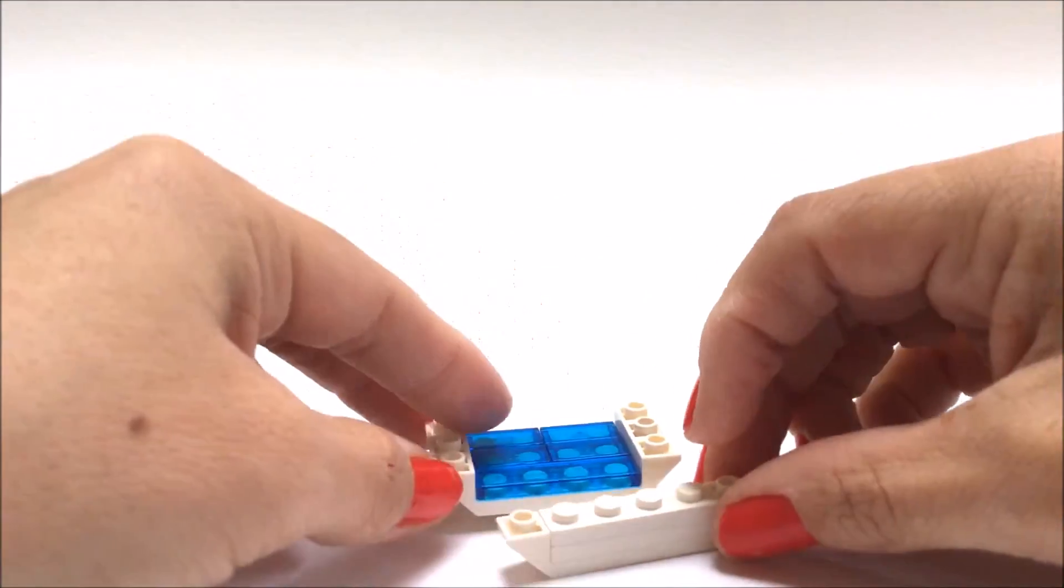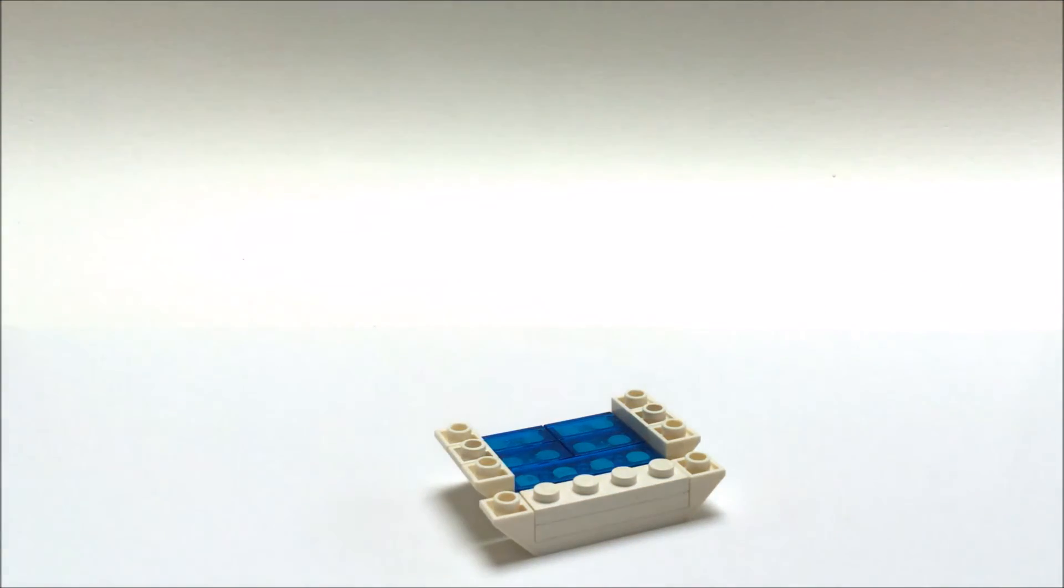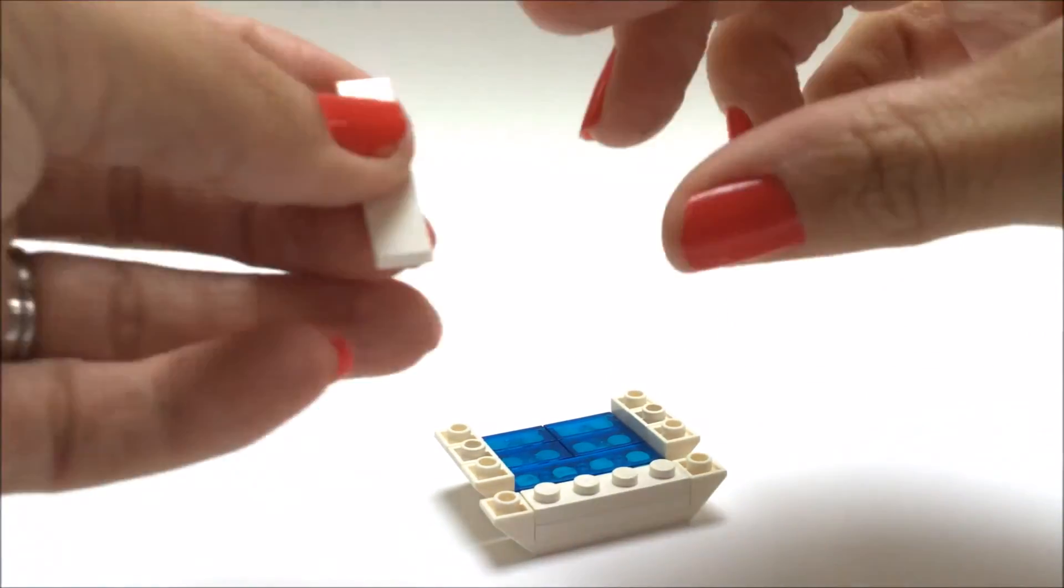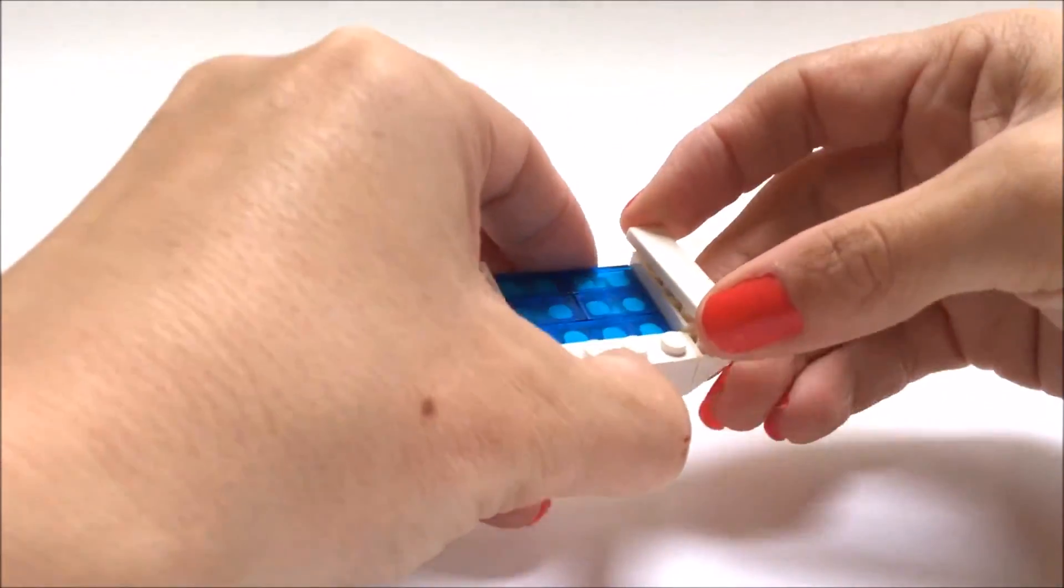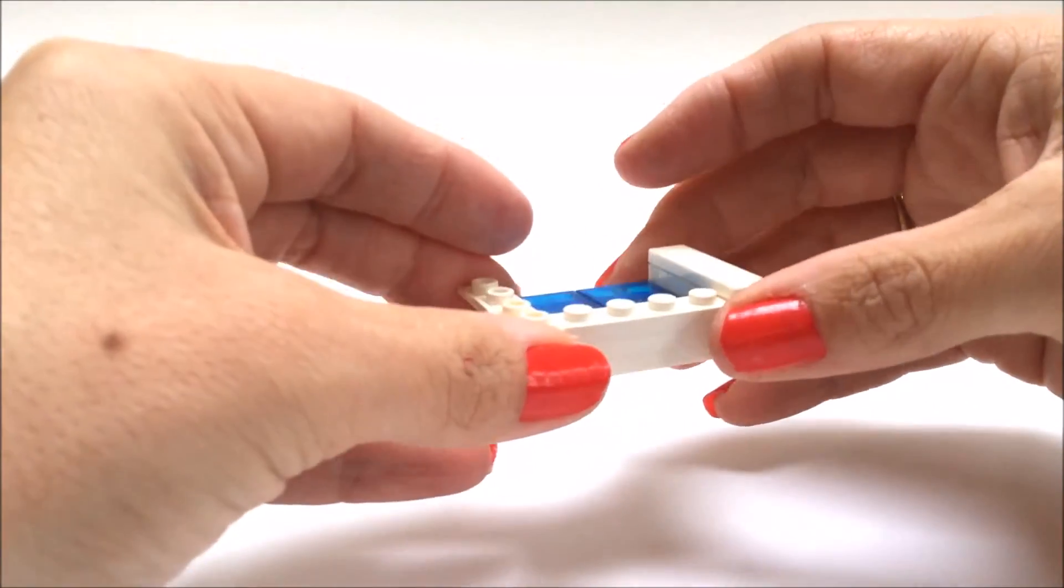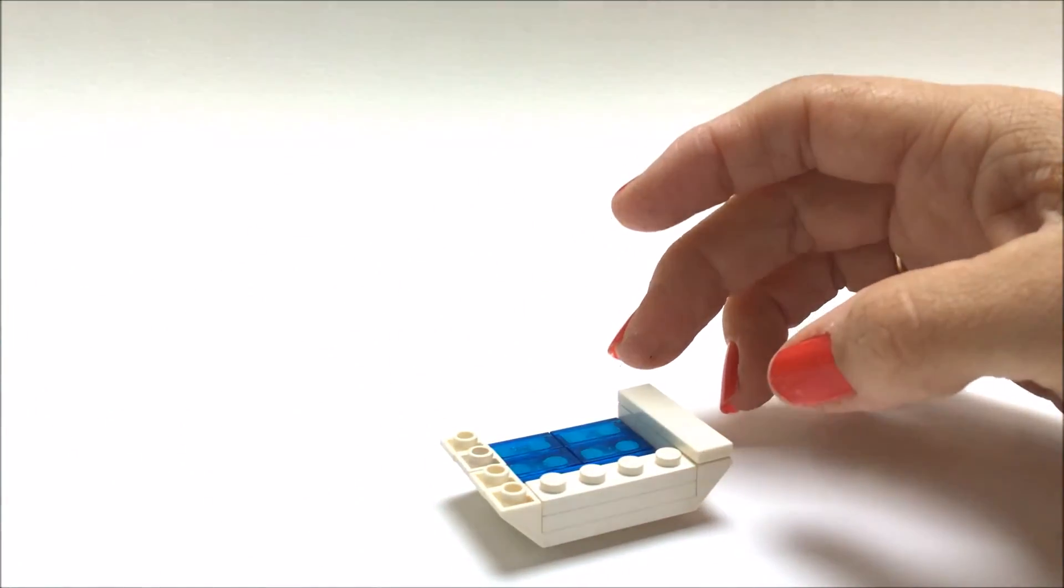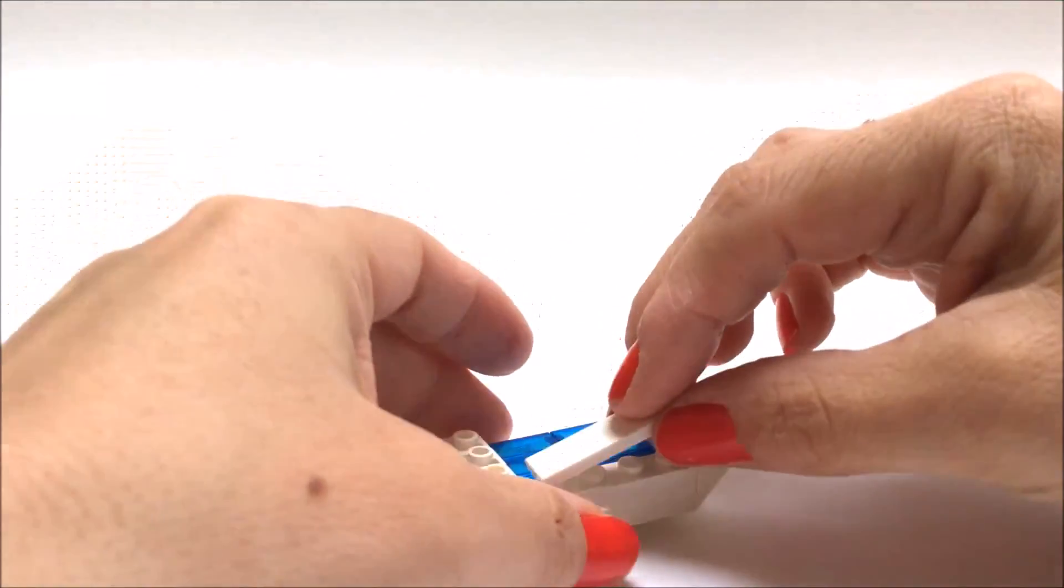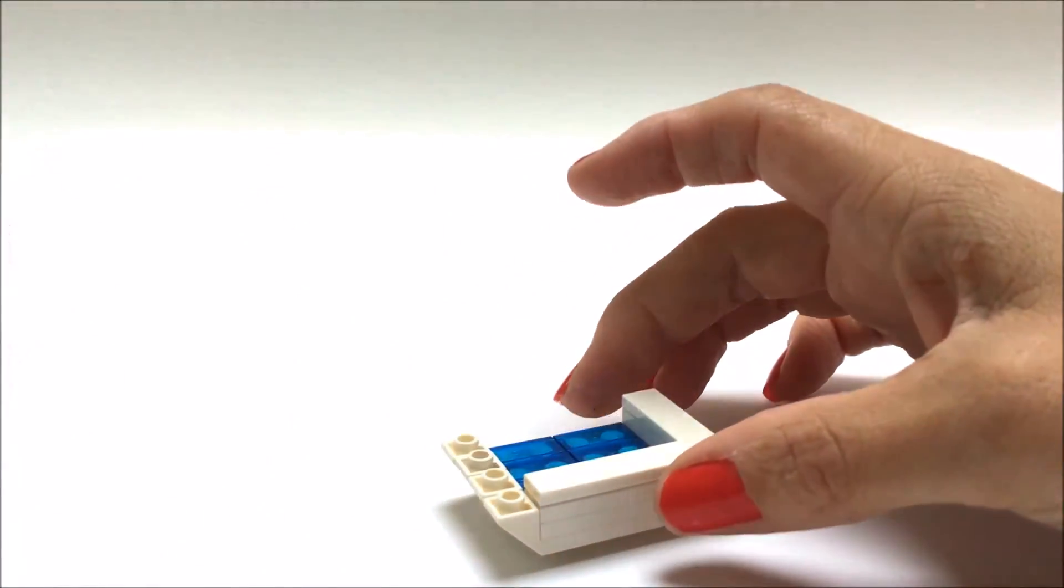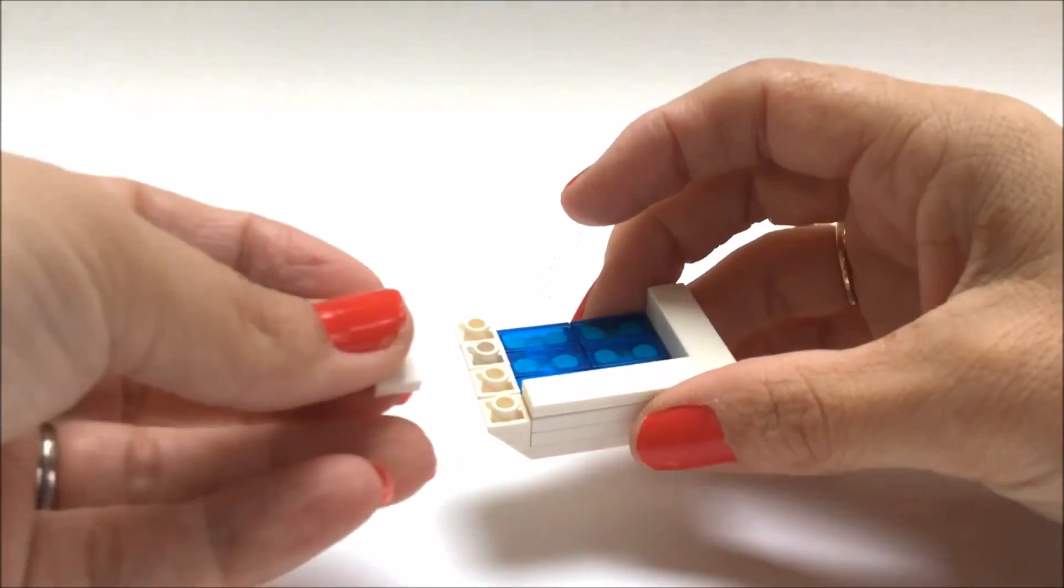Now to attach that to these we're going to use a four by one tile like so, along the side another four by one and again to anchor those bricks together.